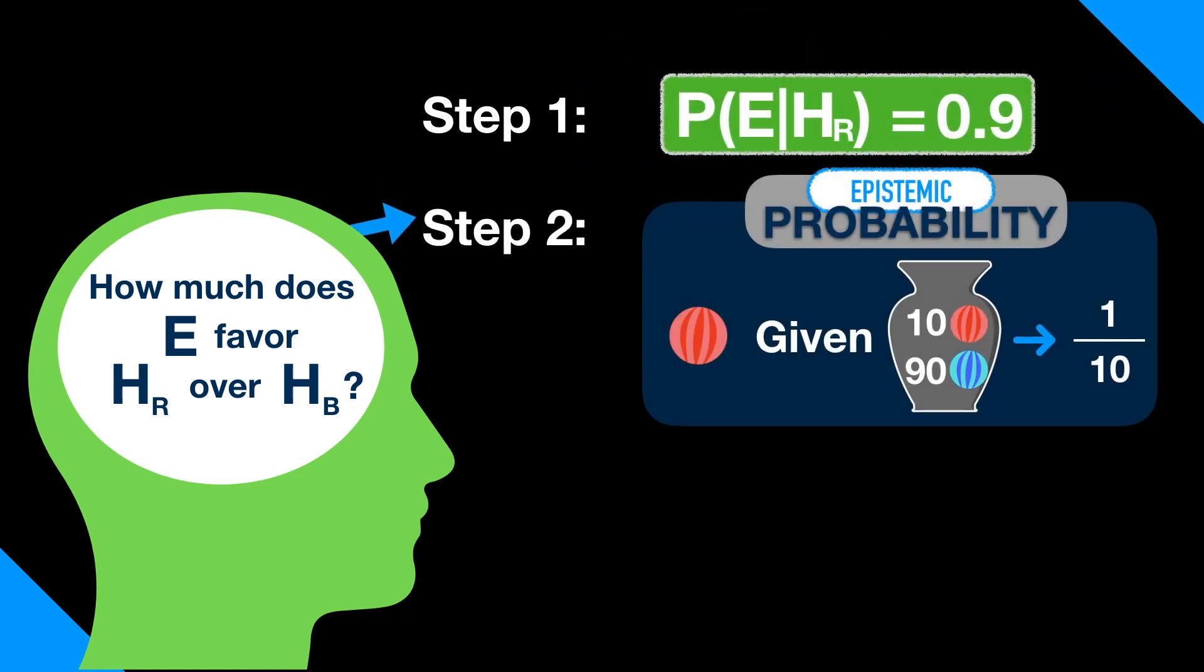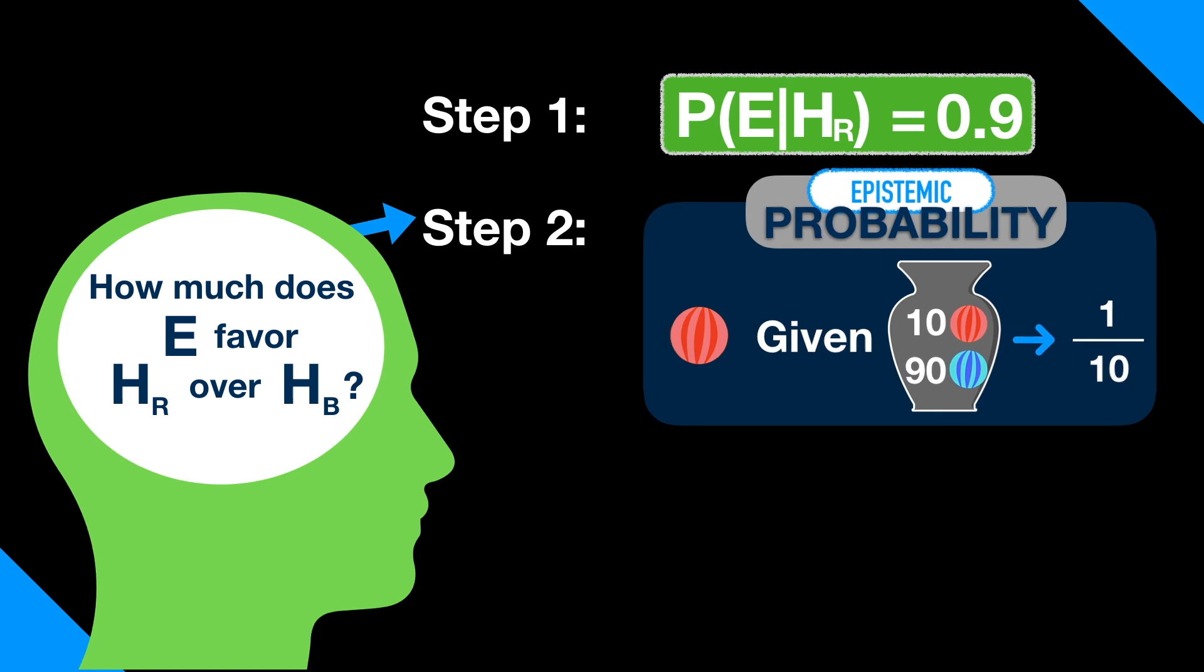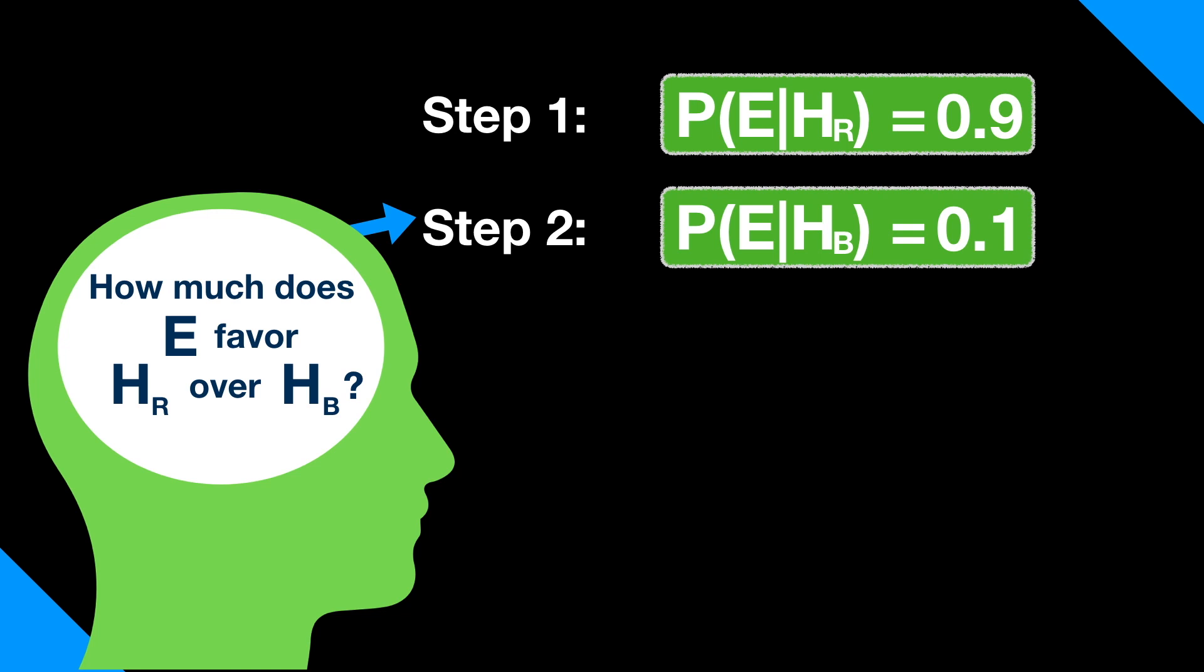Second, figure out how much E was to be expected if HB is taken as true. If HB is true, then 10 out of 100 marbles were red. So the epistemic probability of the evidence E, the fact that you drew a red marble, given the truth of HB is only 10 out of 100, or one-tenth. Symbolically, we would write it like this.